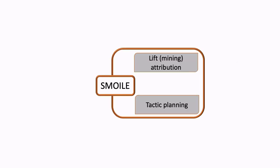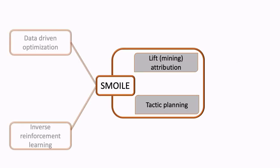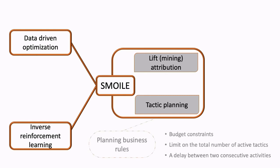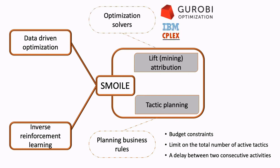The resulting framework, SMOIL, that joins data-driven optimization and inverse reinforcement learning can incorporate a large array of business rules related to planning and it can be efficiently solved by commercial optimization solvers.